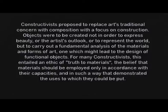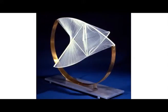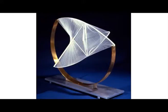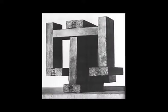For many constructivists this entailed an ethic of truth to materials — they were talking about the authenticity of the materials used, and the belief that materials should be employed only in accordance with their capacities and in such a way that demonstrated the uses to which they could be put. If we try to derive meaning in relation to real-life visual experiences, we will be completely misreading the sculpture or work of art. We need to enjoy the construction, the structural capacities, the material capabilities and material character and authenticities in these works.